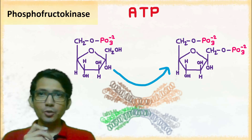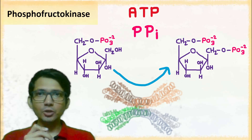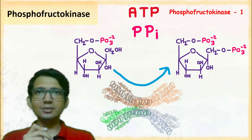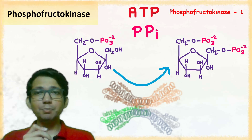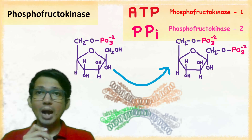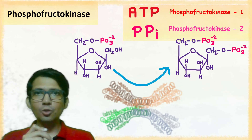Some phosphofructokinase uses ATP while the other uses pyrophosphate for this reaction. The phosphofructokinase that uses ATP is classified as phosphofructokinase 1, while the phosphofructokinase that uses pyrophosphate is classified as phosphofructokinase 2. Always remember there is a minor difference between phosphofructokinase 1 and phosphofructokinase 2.